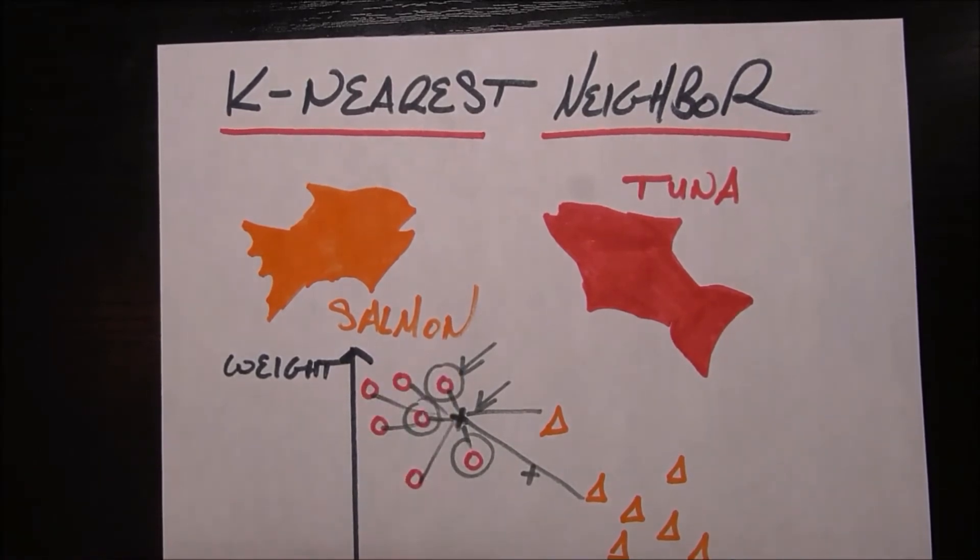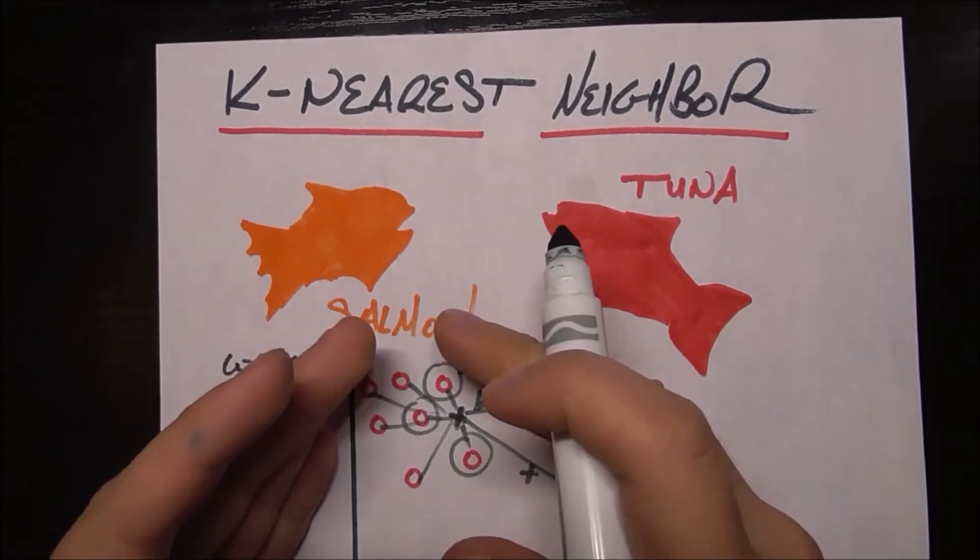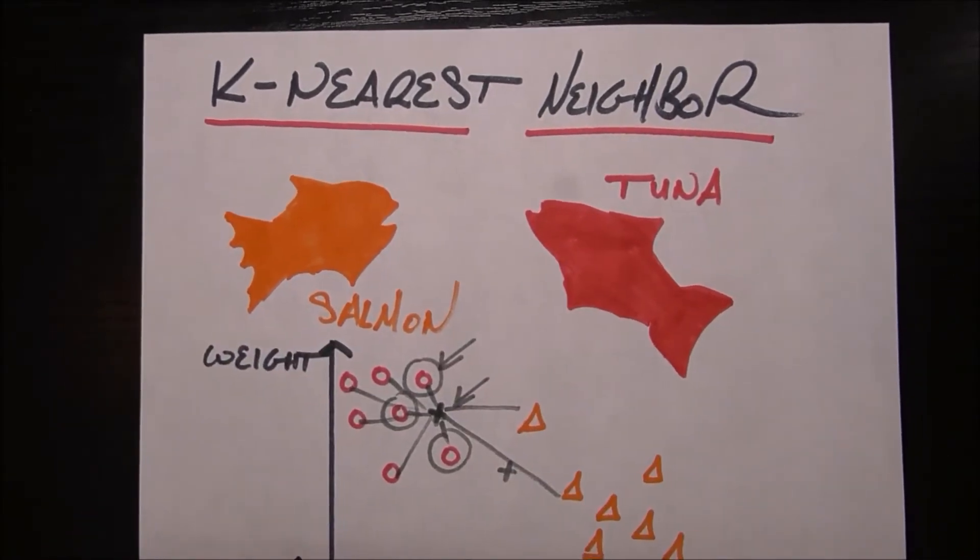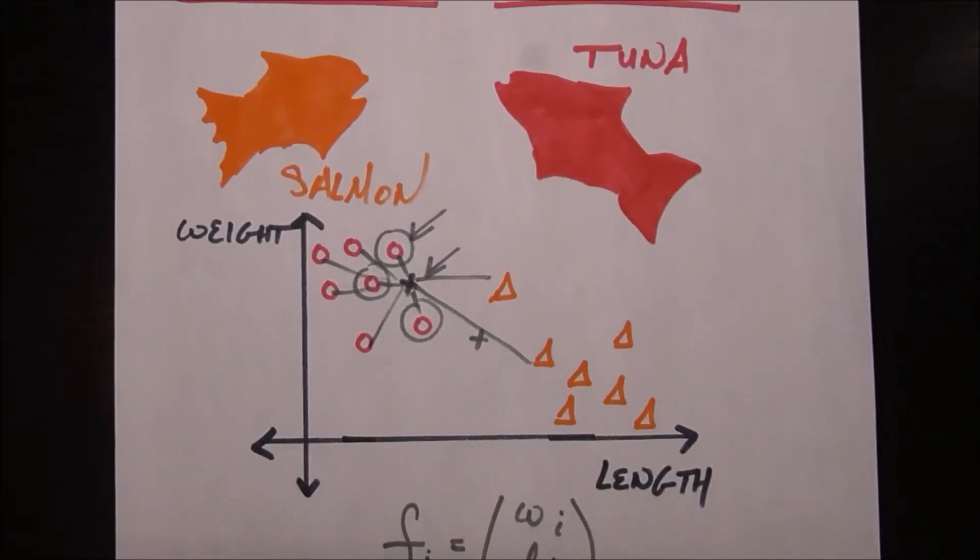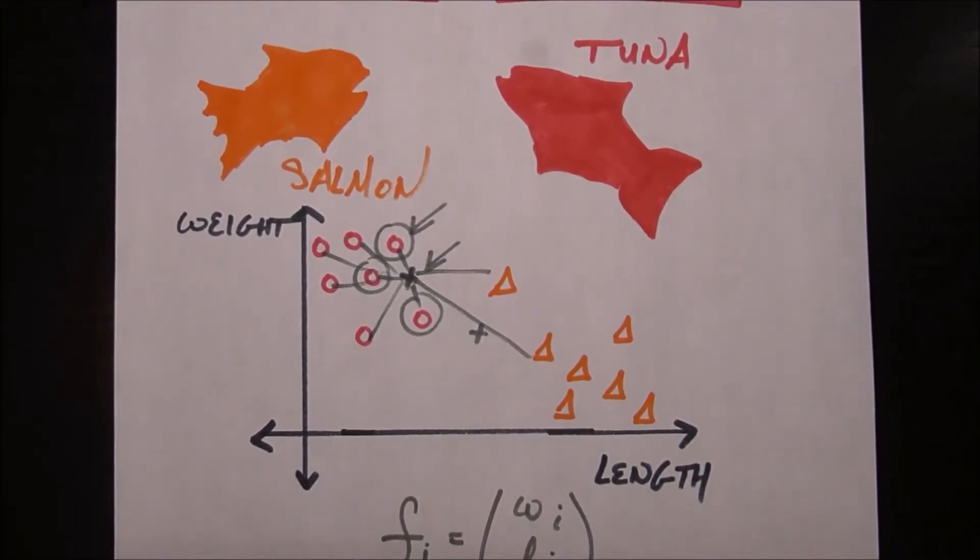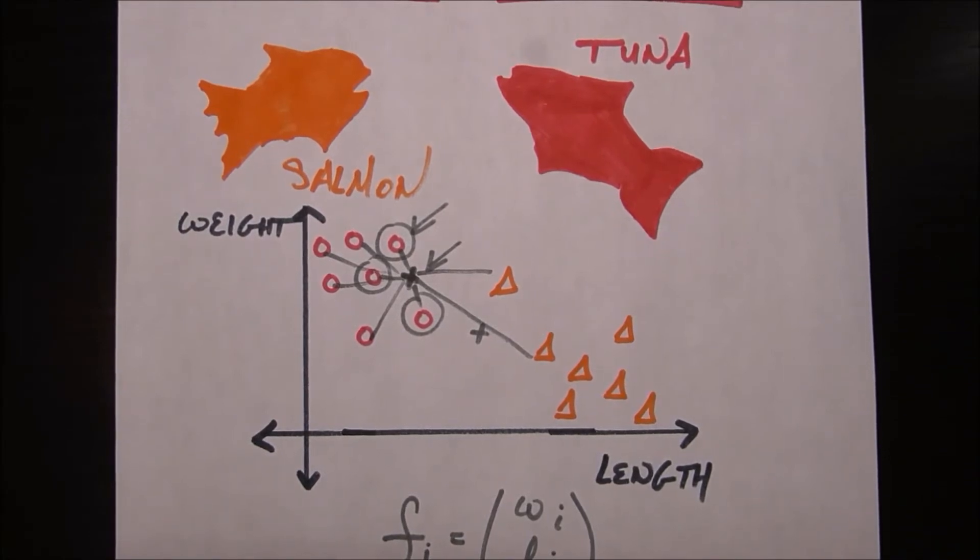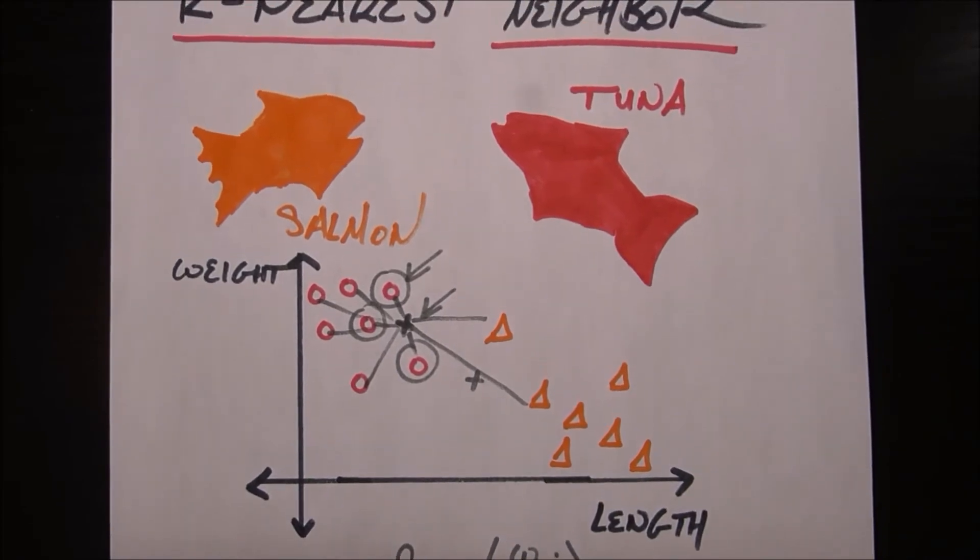So of your three closest neighbors, we figure out how many are salmon and how many are tuna. In this case they're all tuna, so we assign you as a tuna as well. That's a very logical way to go about it. It basically says the idea that you are very similar to people who have similar characteristics to you. That's basically how it works.